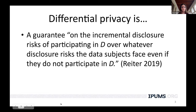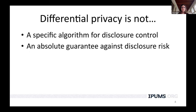So what is differential privacy? It is a collection of methods of introducing noise into data products that are published, such that there's a mathematical guarantee that the risk to any individual of disclosure of their characteristics is no greater than a certain threshold if they had not participated at all. Differential privacy is not a specific algorithm for disclosure control — there are a wide variety of ways of implementing it — and it's also not an absolute guarantee against disclosure risk for any particular individual.